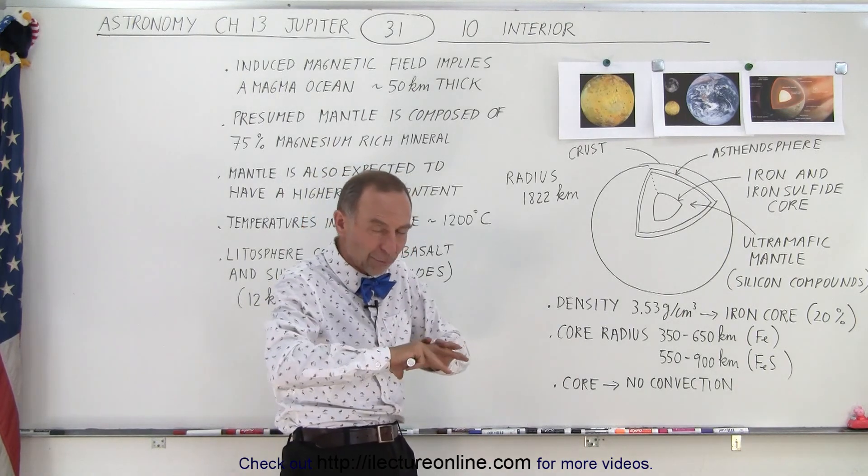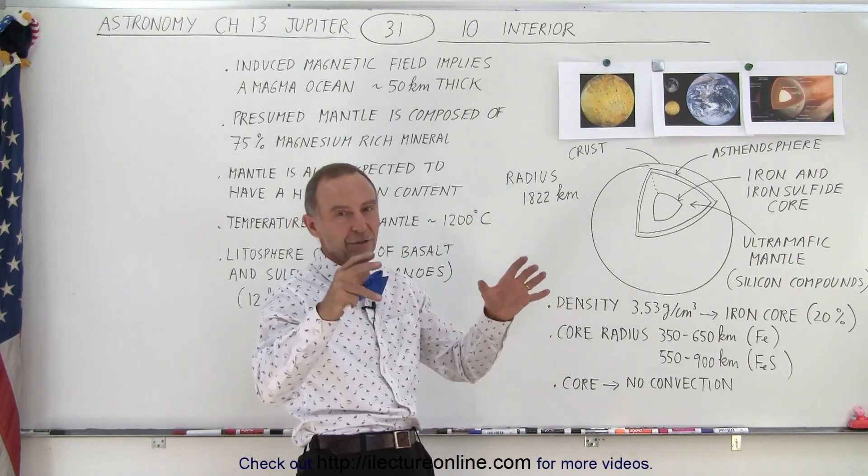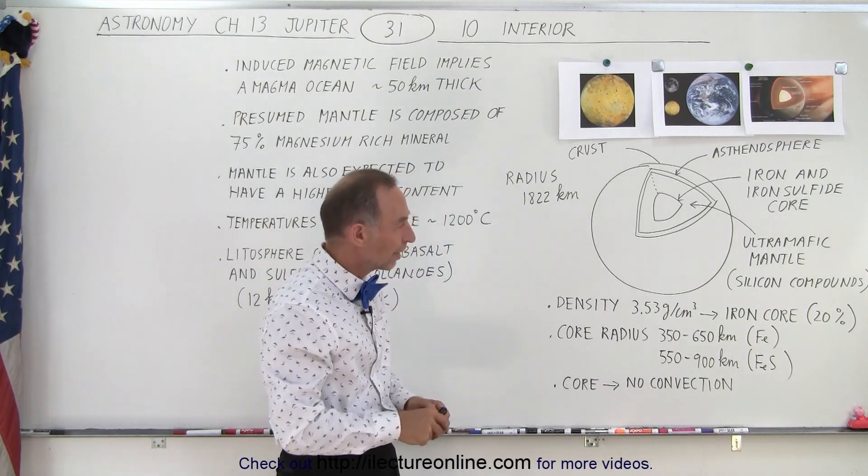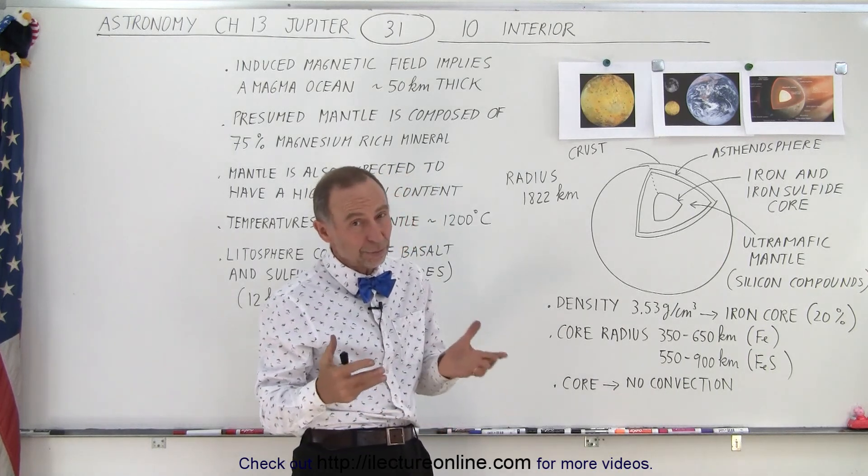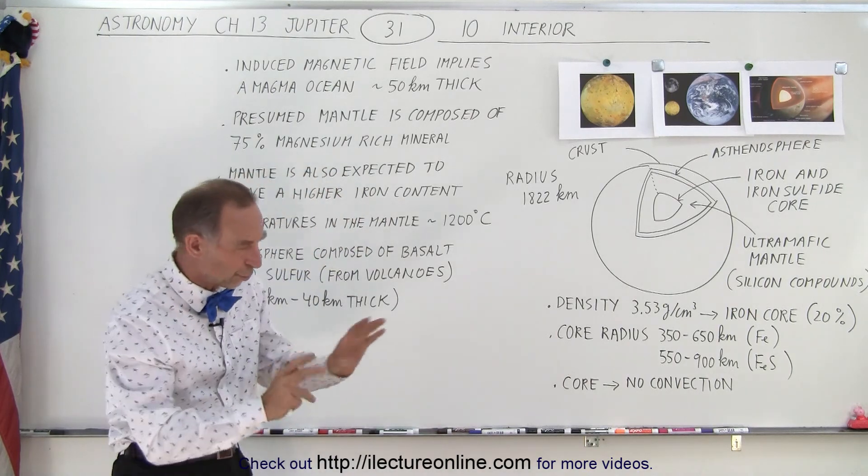Of course, half the radius doesn't mean half the volume, because the mantle part becomes much bigger in volume than the core would be. But still, half the radius would be very significant - a very significant iron sulfide core. But we don't know which way it is.